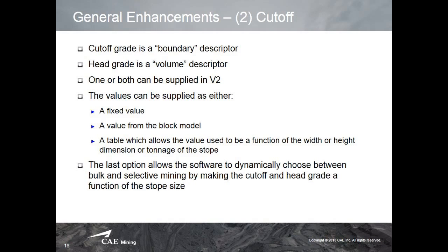Another key feature of version 2.0: currently only a cutoff grade limit is used to generate stopes. A new head grade feature will be added so you can define one or both to generate the best stopes. These values can be set as fixed values or values per block based on cell size. You can also use a table with a function based on height and width or tonnage to define the head grade value.